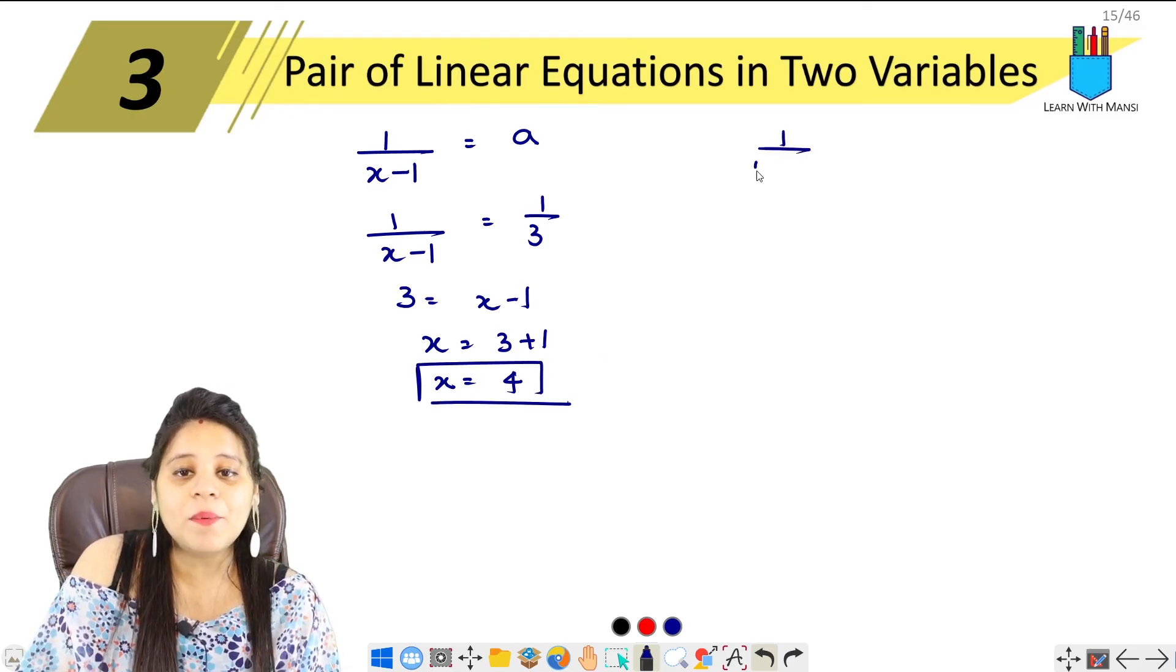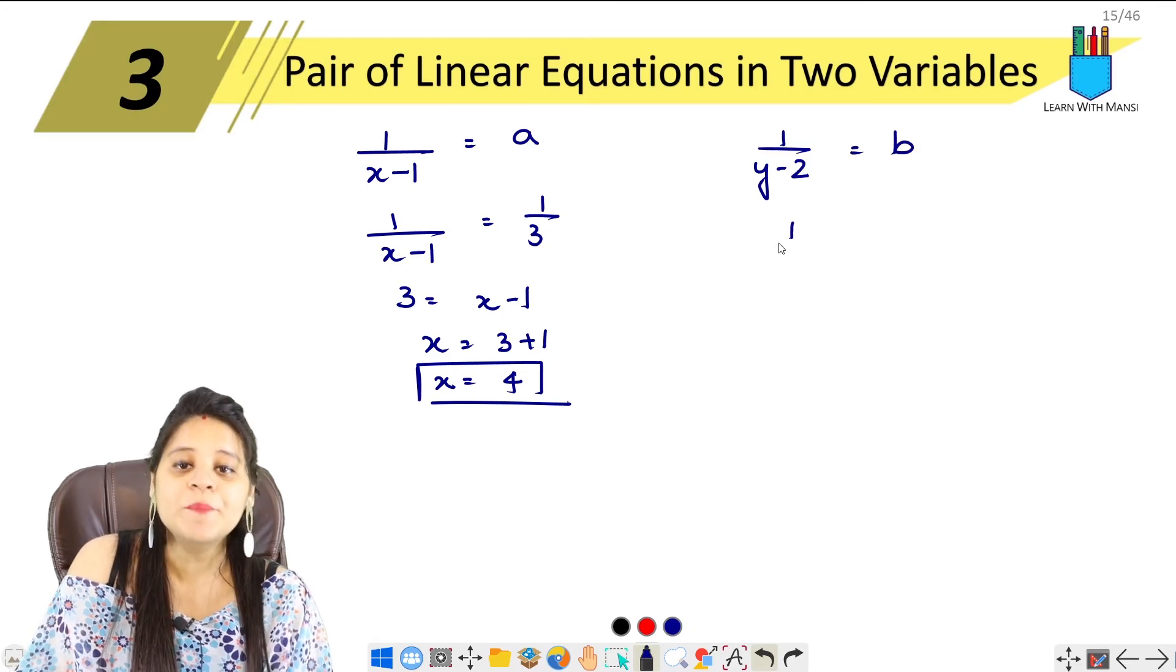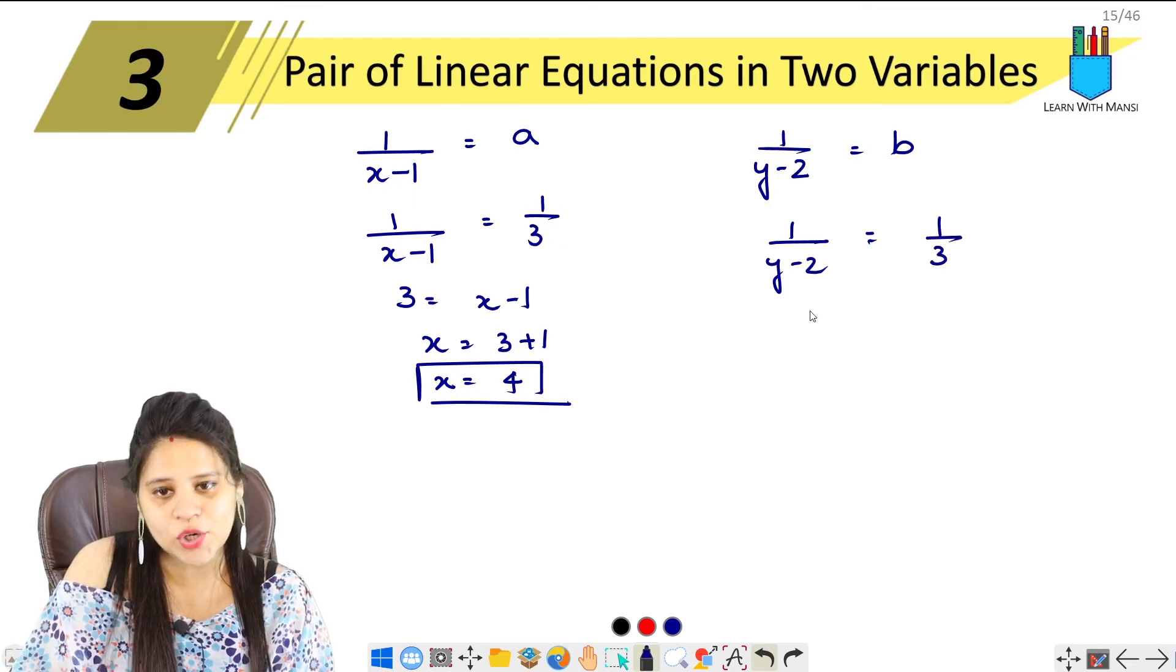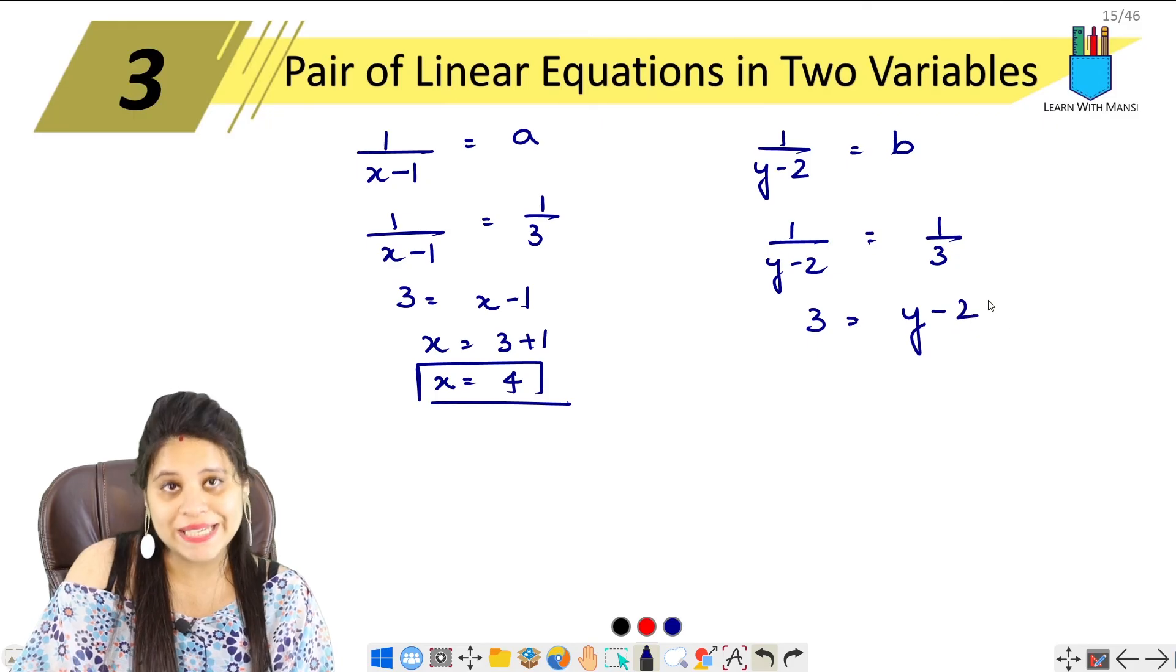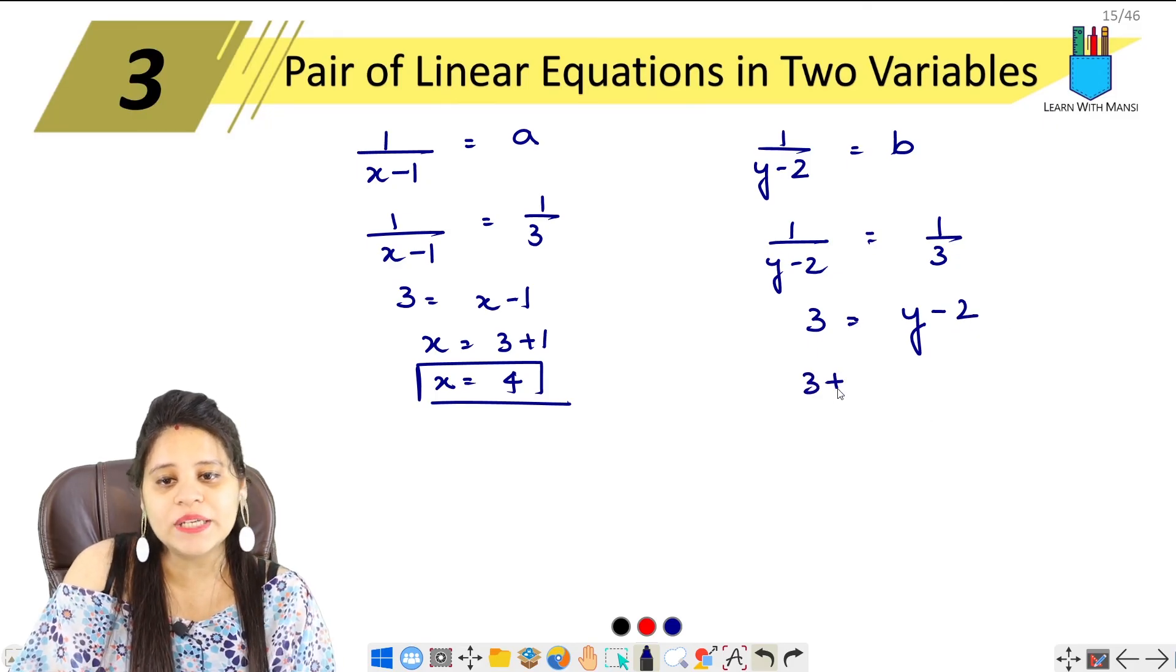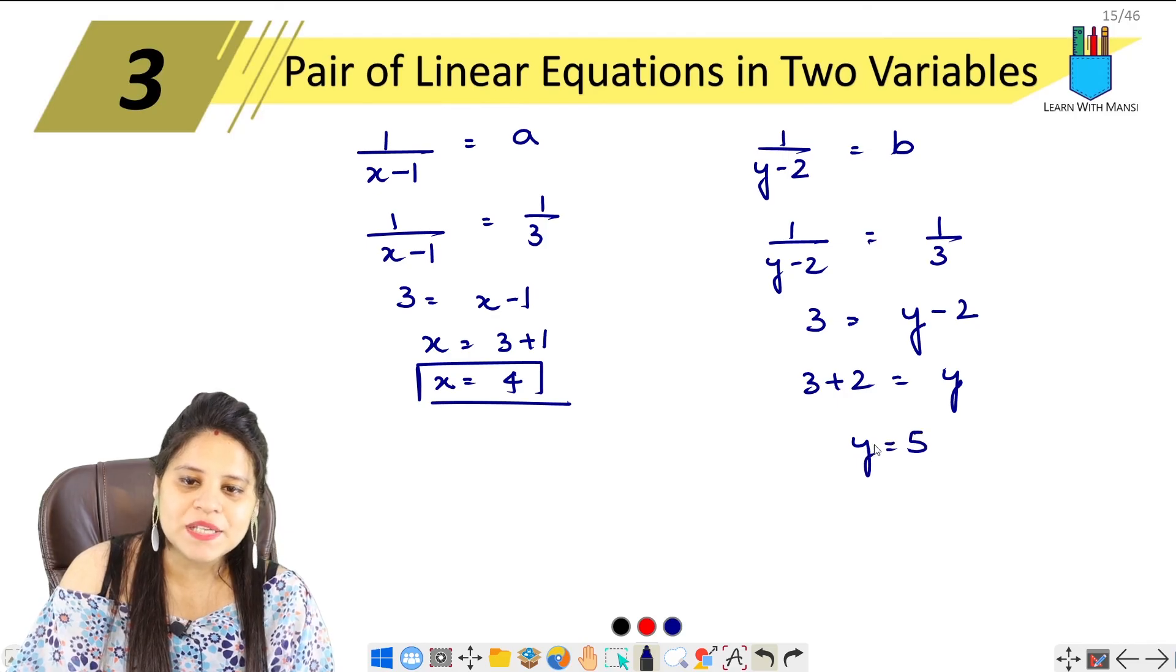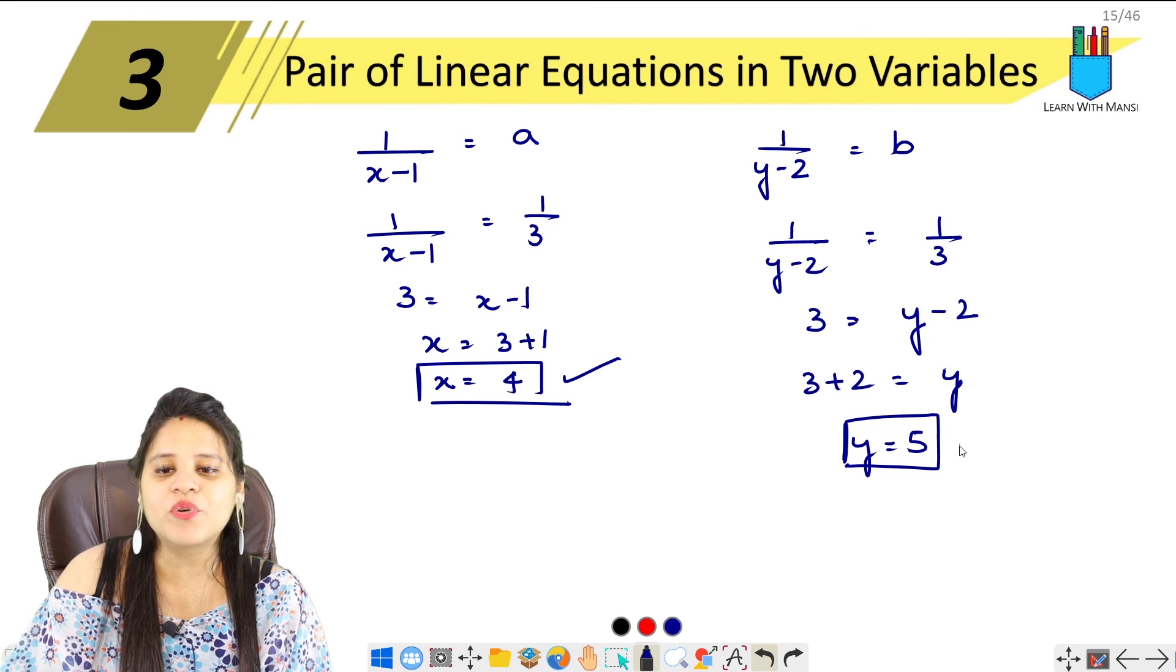Similarly, 1 upon y minus 2 equals to b. So 1 upon y minus 2 equals to 1 upon 3. Cross multiply: 3 equals y minus 2. So y equals 3 plus 2 is 5. So x will be 4 and y will be 5.